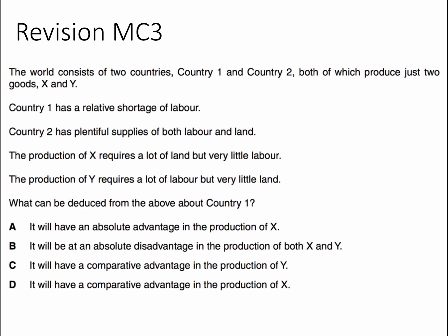Question three. The world consists of two countries, country one and country two, producing goods X and Y. Country one has a relative shortage of labour, whereas country two has plentiful supplies of both labour and land. The production of X requires a lot of land but little labour. The production of Y requires a lot of labour but very little land. Given this information, what can we deduce about country one? Have a go.